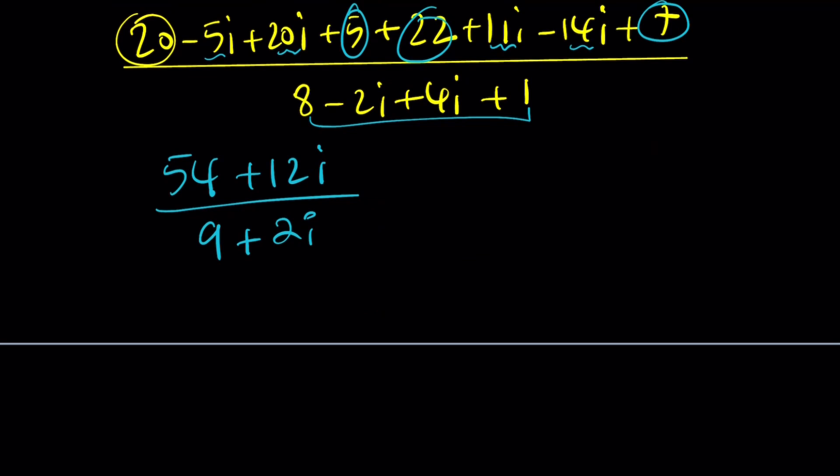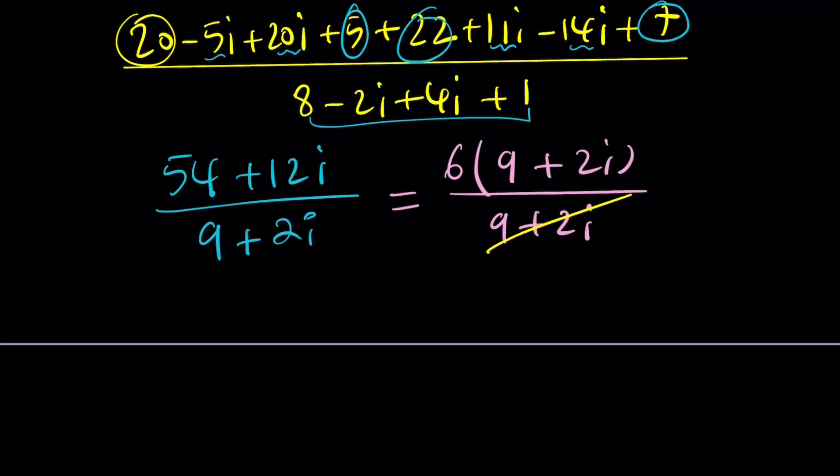Now you might be thinking, we had two division problems, now we have one, so it's better. But are we still going to divide? No. Because we're going to take advantage of algebra here and factor the numerator, which is what makes this problem solvable by two methods. Take out a 6, you're going to get 9 plus 2i, and then 9 plus 2i. They cancel out leaving us with a 6. So the answer is 6. Wow, how simple that is.